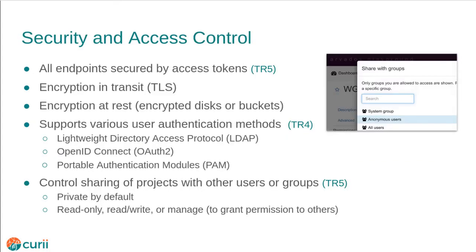Because biomedical data is subject to privacy regulation, Data Commons Technical Requirement 5, Security and Compliance Services to Support Controlled Access Data, is essential. All access to Arvados API endpoints require the client to present an access token that identifies the user. All traffic is encrypted by default using TLS, and Arvados can be easily configured for data to be encrypted at rest. Use of the system is logged to support audits.